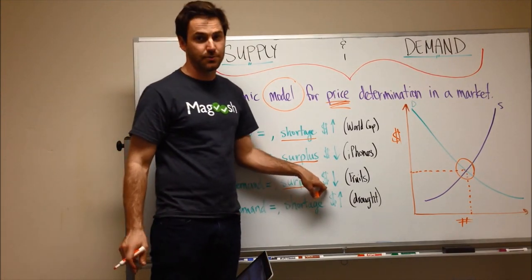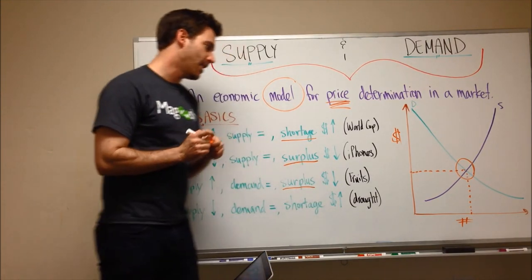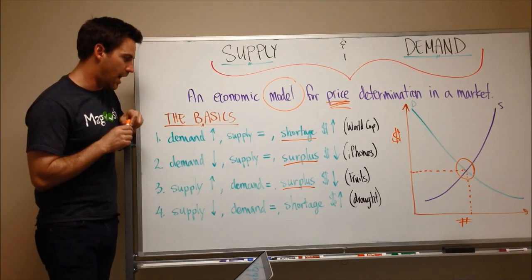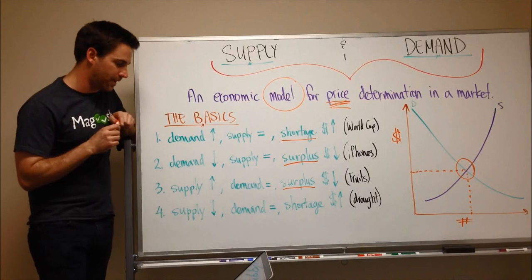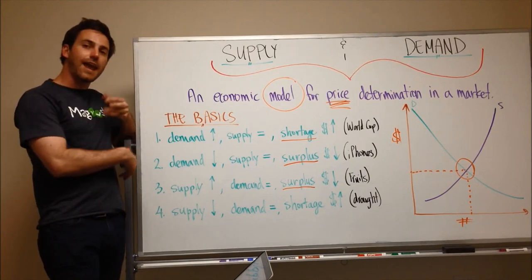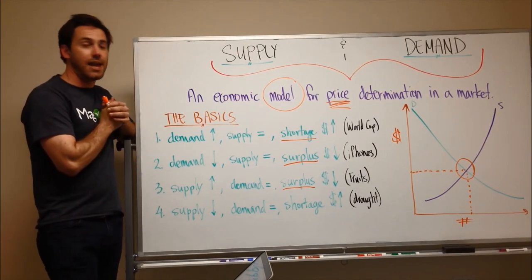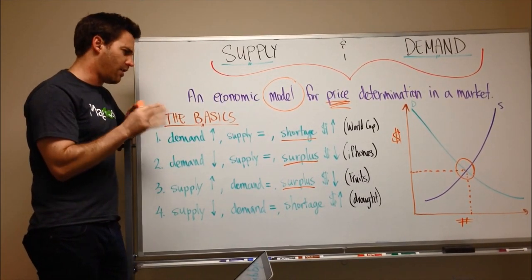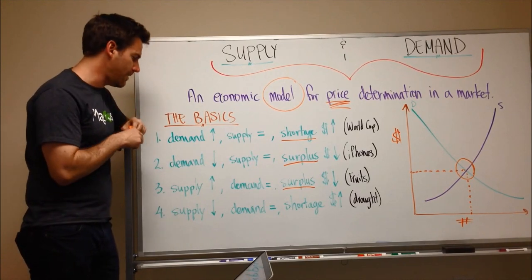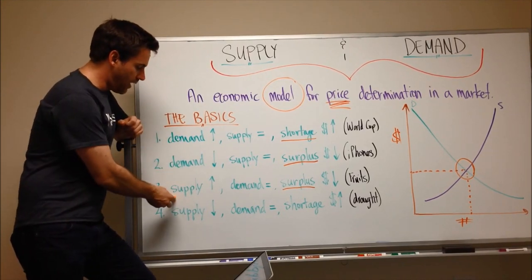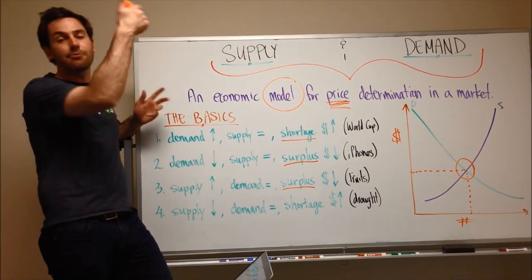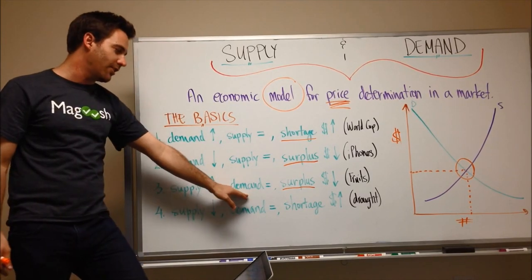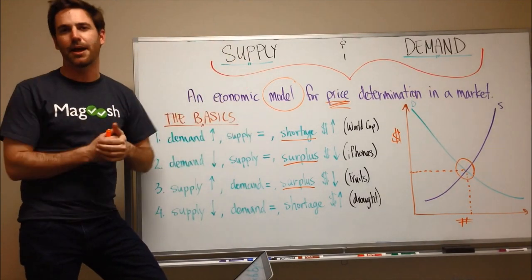So you can think about seasonal fruits and vegetables seem to obey this basic concept, where once a fruit comes in season, let's say cherries. Cherries come in season in California around June or July. So at that time, the supply just skyrockets. There's tons of cherries on the market.